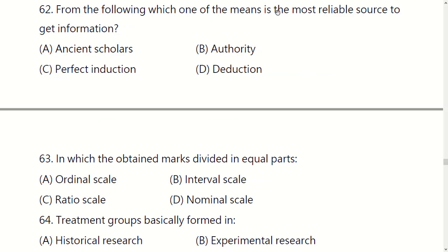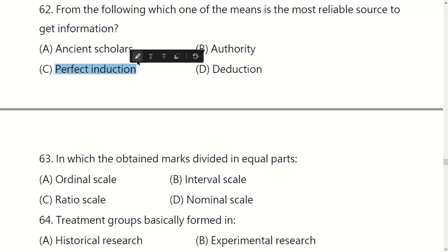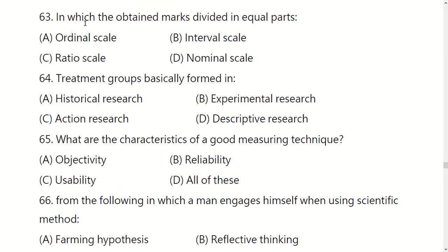From the following, which one of these is the best reliable source to get information? Options: ancient scholars, authority, perfect induction, or deduction. The right option is C: perfect induction.